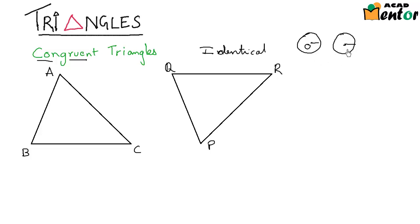So this circle with center O and this circle with center O prime are both identical, so the word congruent can be used to describe these two circles.